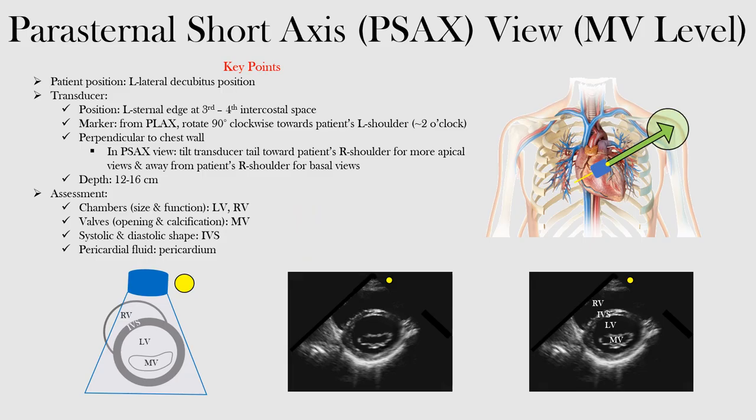In the previous lecture, we looked at the parasternal short axis view at the aortic valve level. Now we're going to move down a little more towards the apex and look at the mitral valve level.